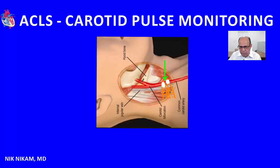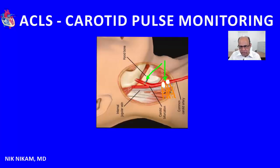Why should we come straight down and not up? If you go upward, the artery is deeper in location and it divides, which may make it difficult to appreciate a strong carotid pulse. Hence it is important to come straight down where the artery is most superficial. That helps us feel the carotid pulse at its maximum impulse.